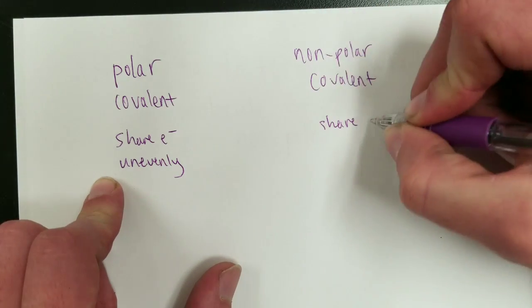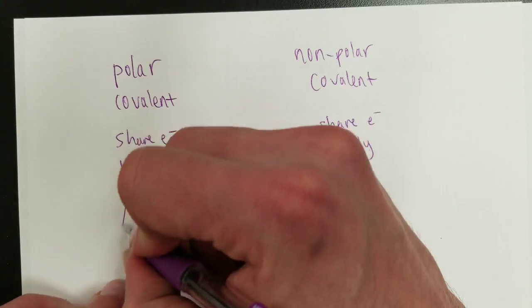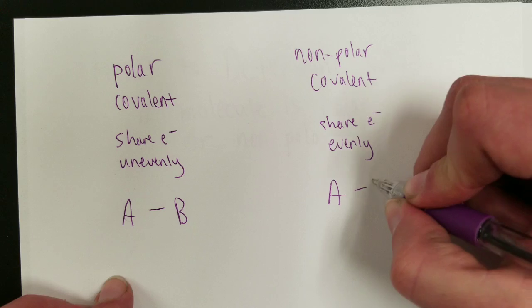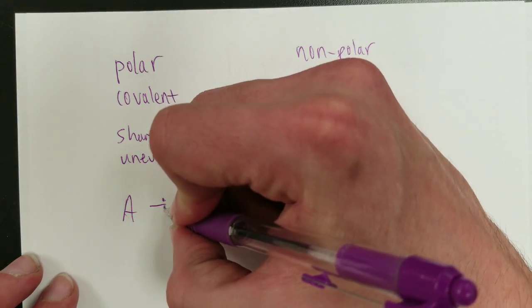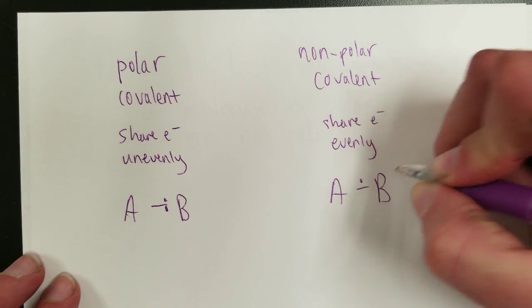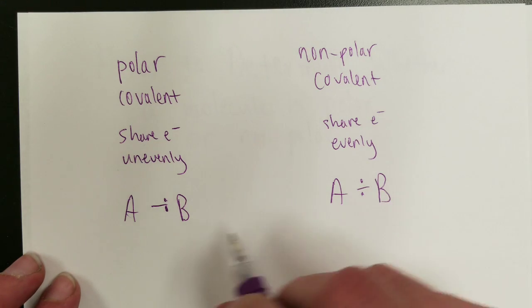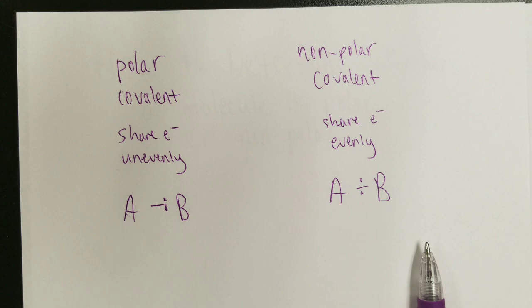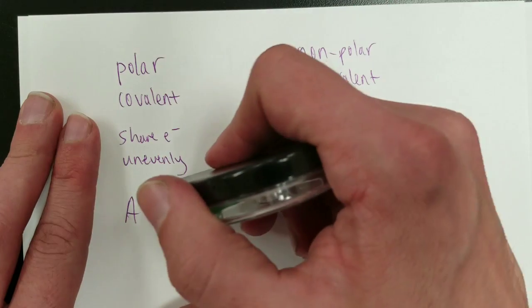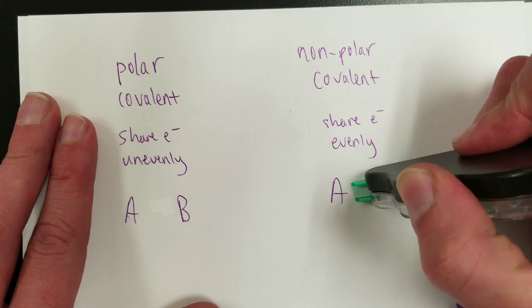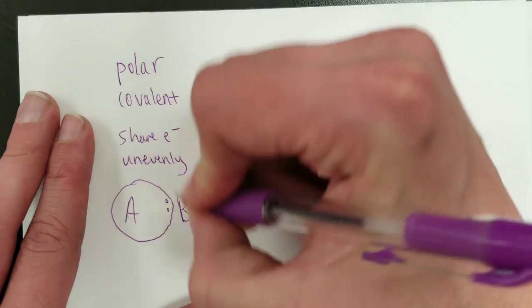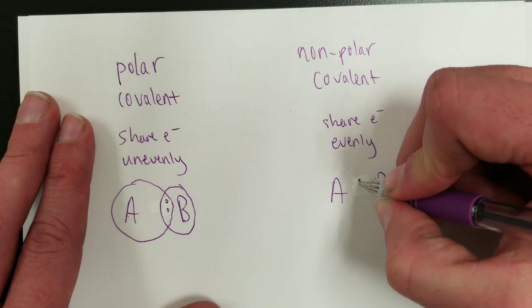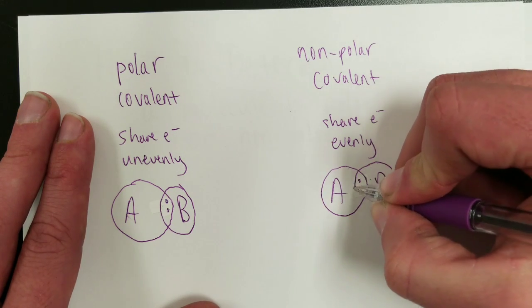These are some atom A bound to some atom B. If it is polar, it means that one of the atoms, maybe this one, is hogging the electrons a bit more, whereas in a non-polar covalent bond, they are sharing them equally. This is just meant to show that these two are sharing the same electrons but unequally, where you can see they're much closer to atom B. And here the electrons are being shared equally, roughly equal distance in between.